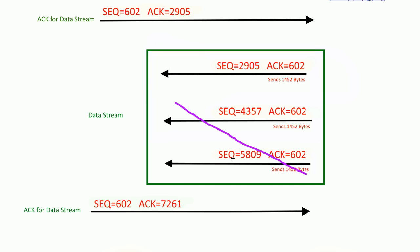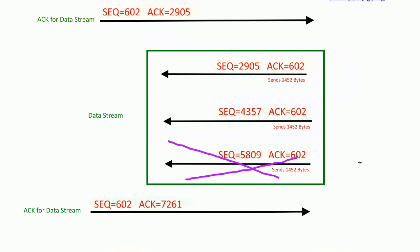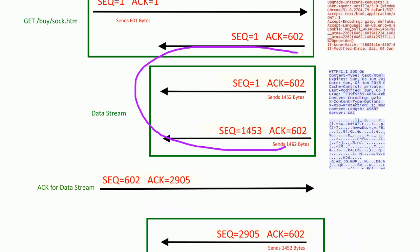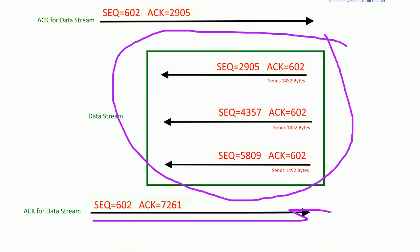Hopefully that gives you a good idea of how acknowledgements work when you lose data. When the connection is good the window size gets bigger and bigger; when you start losing packets the window size shrinks. That's why a lot of connections start out slow — the window size is small at first. If the connection stays good it grows, like going from two segments to three segments before needing an acknowledgement.